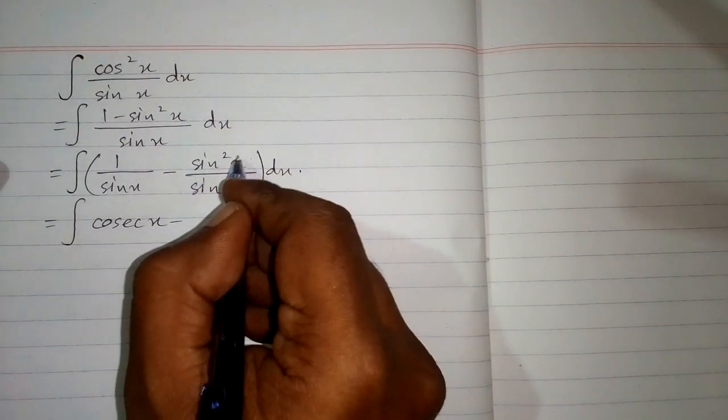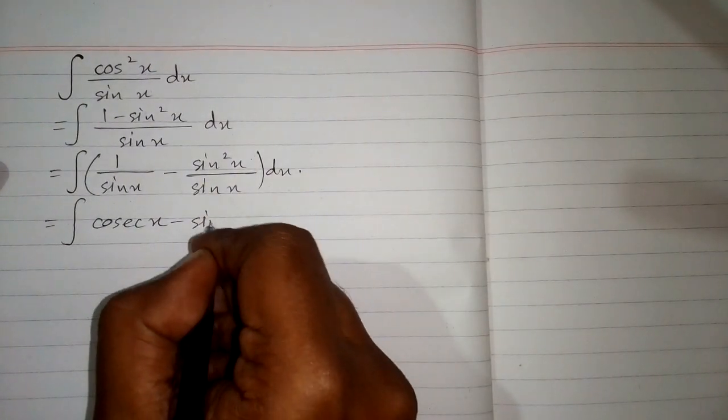And then 1 upon sin x is cosec x and sin square x upon sin x is sin x.